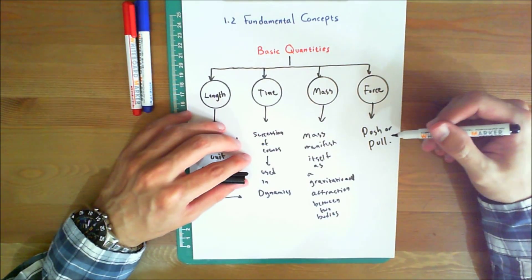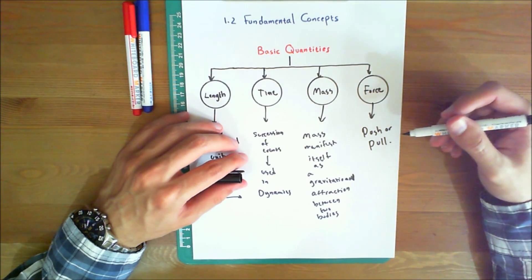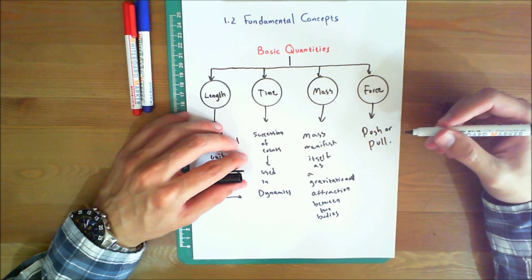Now, this interaction can occur when there is direct contact between the bodies, such as a person pushing on a wall, or it can occur through a distance when the bodies are physically separated.